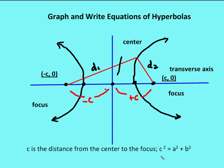To find the c value you use the equation c² = a² + b². This differs from ellipses, where c² = a² − b². An easy way to remember this: in the ellipse equation you're adding two terms, and in the hyperbola equation you're subtracting two terms, so the sign in the c formula is the opposite — c² = a² + b² for hyperbolas.